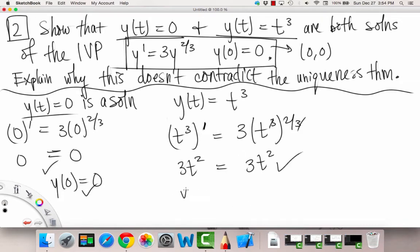The ODE is satisfied. When we plug in 0, we get y(0)=0³=0. So our initial condition is also satisfied. So we have that y(t)=t³ is a solution as well.